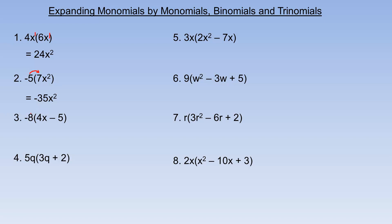In number 3, we're multiplying the negative 8 into the brackets — a term you'll sometimes hear is that we're distributing into the brackets. That means we're multiplying the negative 8 by both terms in the brackets, or all terms if there are more than two. So negative 8 times 4x is negative 32x, and negative 8 times negative 5 is plus 40.